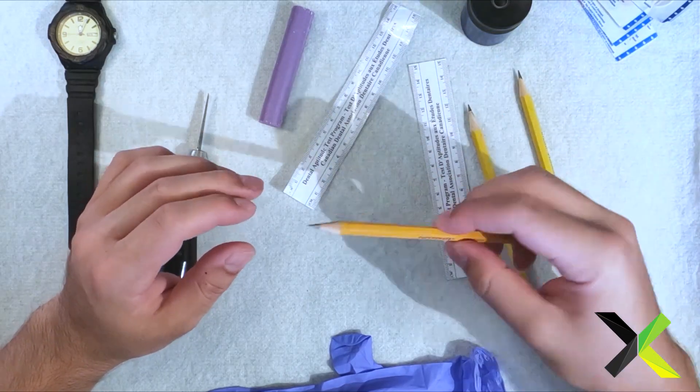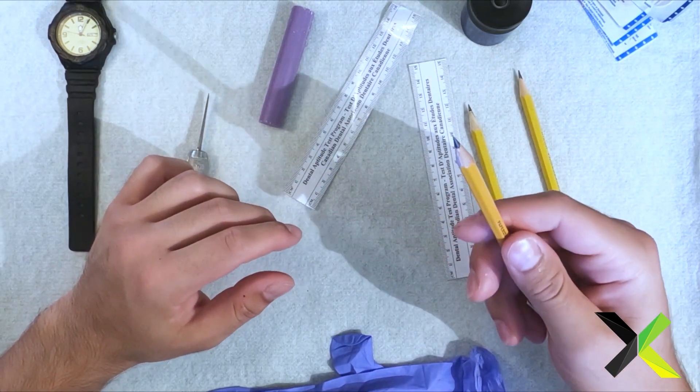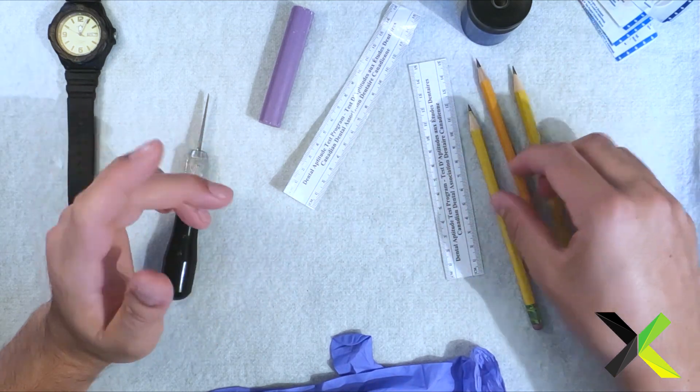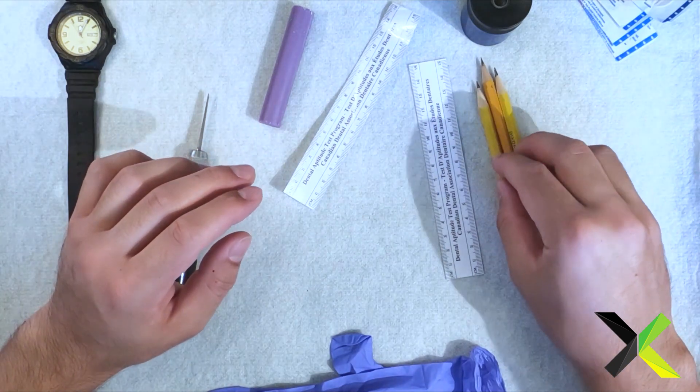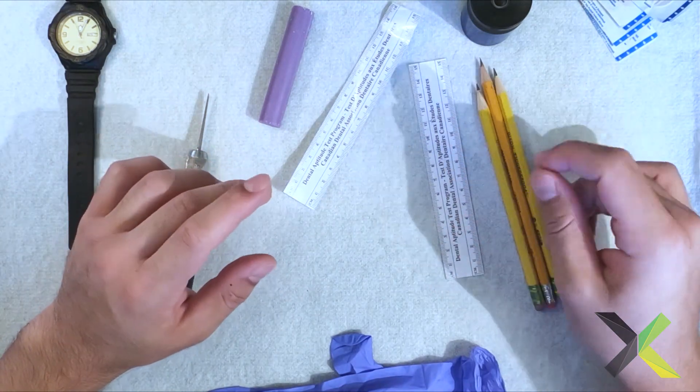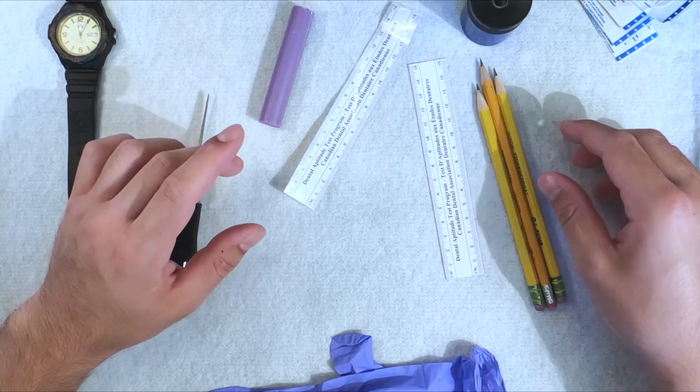That's why I say sharpen these as sharp as you can possibly get them. Make sure that you have at least three of these because you might break a tip and you don't want to waste time sharpening while you're supposed to be carving your soap.